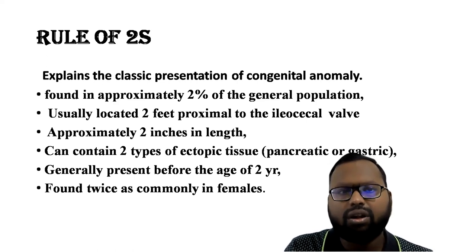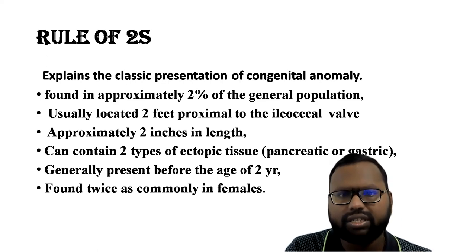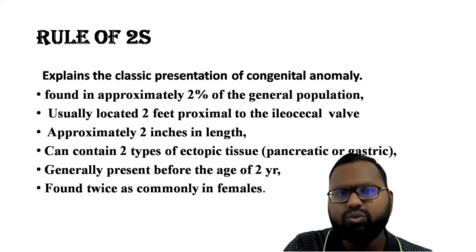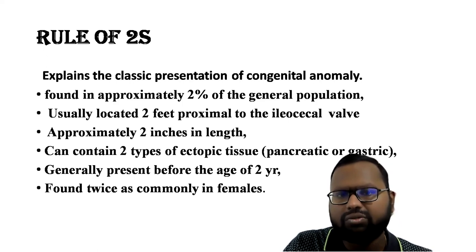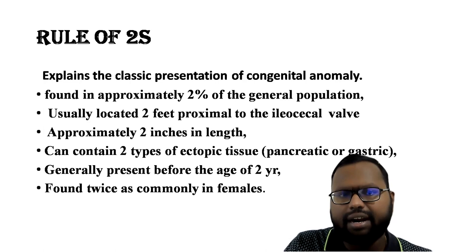You must know the Rule of Two: it is present in around two percent of the general population, usually two feet proximal to the ileocecal valve, approximately two inches in length, and can contain two types of ectopic mucosa. The most common origin of ectopic mucosa is gastric origin. It usually presents before two years of age and is found twice as commonly in males.